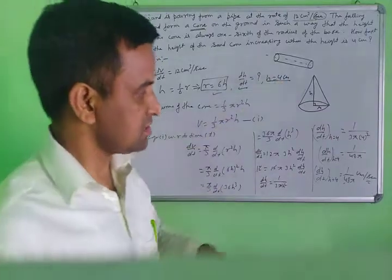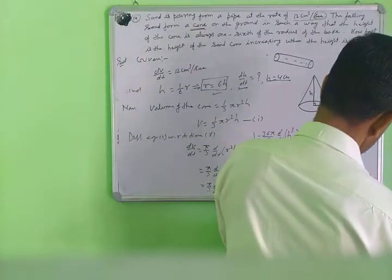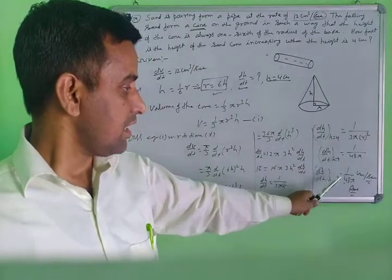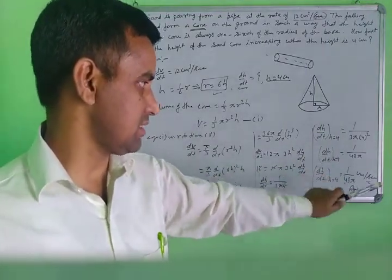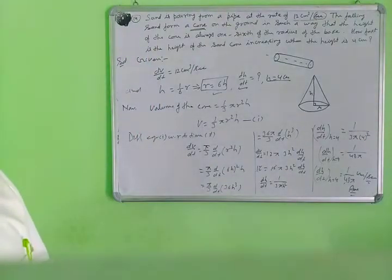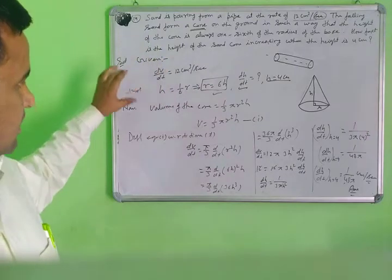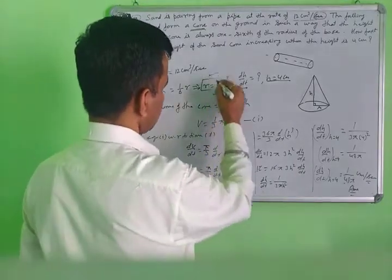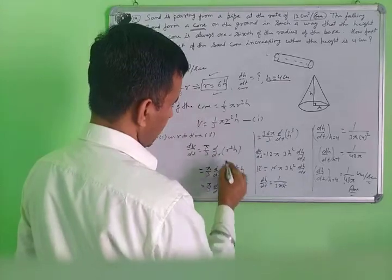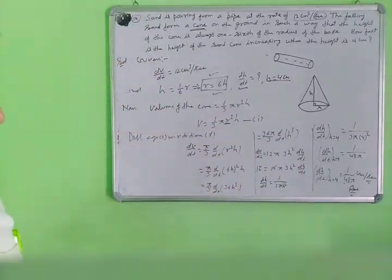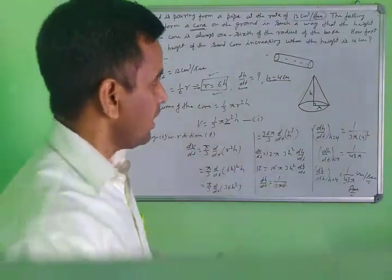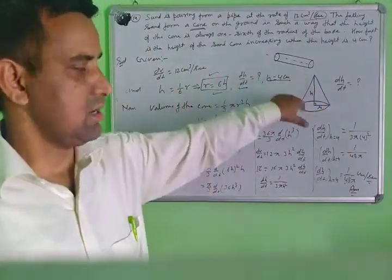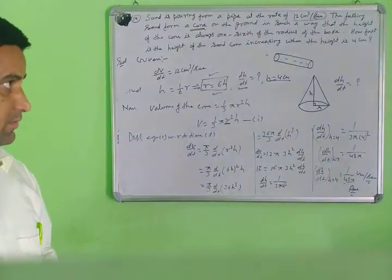So at h equals 4 cm, dh over dt equals 1 over 48 pi centimeters per second. This is the rate of increase of the height when the height is 4 centimeters. The unit is centimeters per second. This is your final answer. The method: write given values, write volume of cone, substitute r equals 6h, differentiate with respect to t, and find dh over dt. Very important question.